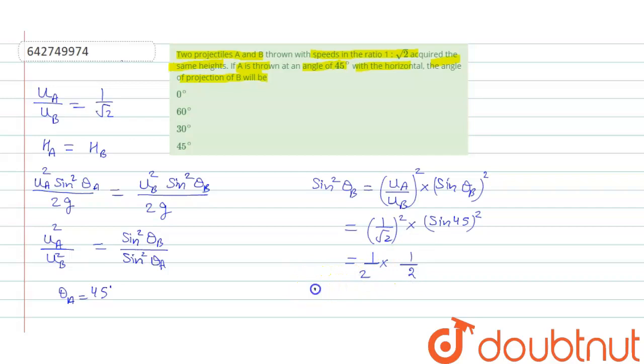This is sin square theta B. So, sine theta B becomes 1 by 2 because left hand side is sin square theta B equals 1 by 2 square. It is equal to 1 by 2 square. So, we are left with sin theta B is 1 by 2.